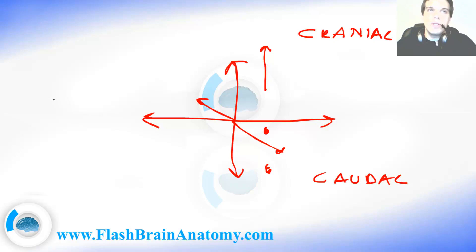We also have sinister and dexter. Sinister means left and dexter means right. We have the dorsal and we have the ventral. So, ventral, dorsal, cranial, caudal, dexter, sinister.